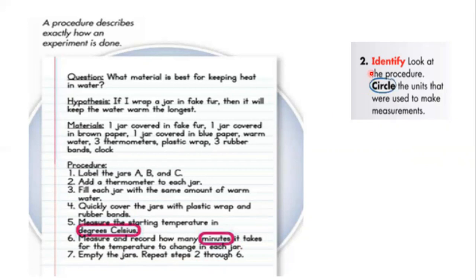Who can read question number two and answer it? Identify. Look at the procedure. Circle the units that were used to make measurements. The units are degree Celsius and minutes. All of you circle it.